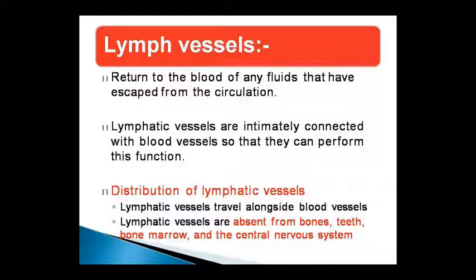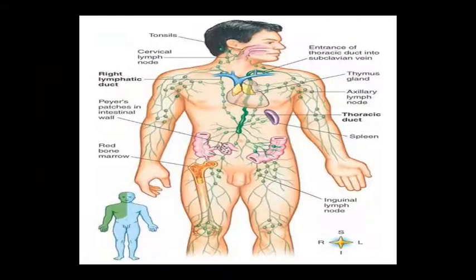Some lymphatic vessels also travel with blood vessels through bone tissue. However, lymphatic vessels are not present in the teeth, bone marrow, and central nervous system — they do not enter those areas. This is shown in the diagram.